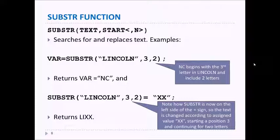Now what if we put the SUBSTR function on the left side of the equal sign? Then what that does is it replaces whatever you have on the right side. In the second example, the XX, it replaces that value in LINCOLN. So again, starting with the N, where the N is, it's going to replace two characters with XX because of the information on the right-hand side. So the return is LIXX.